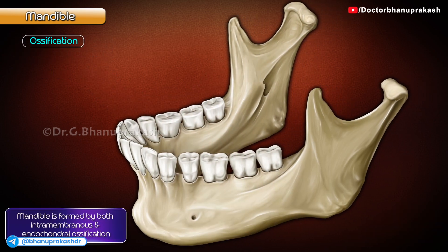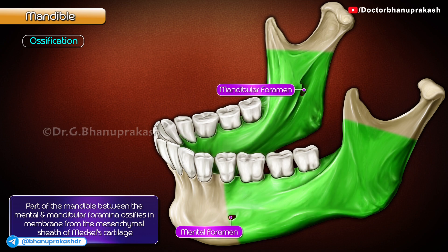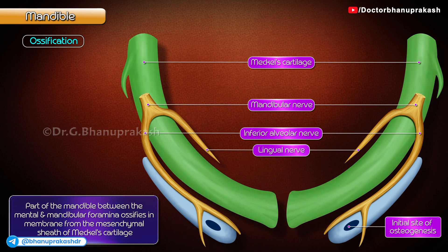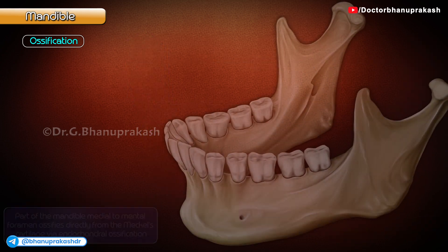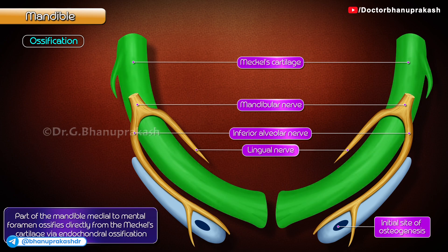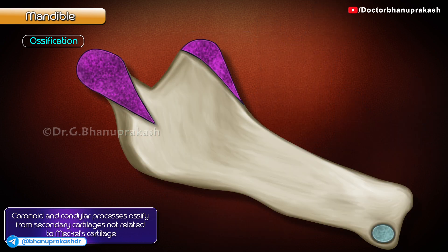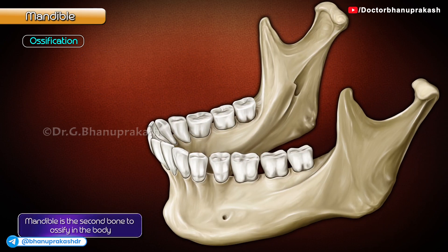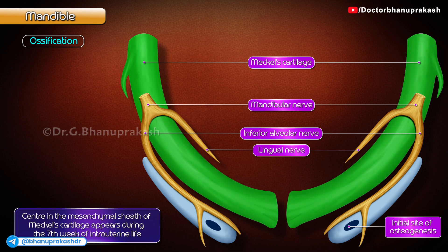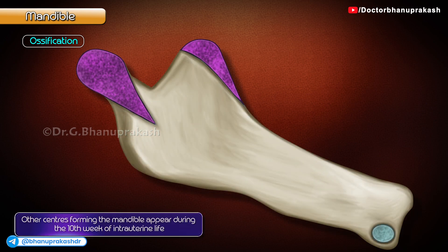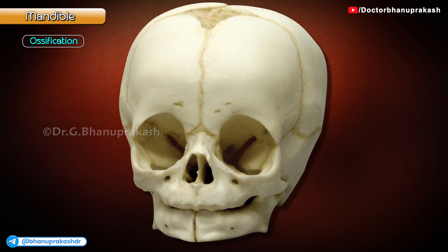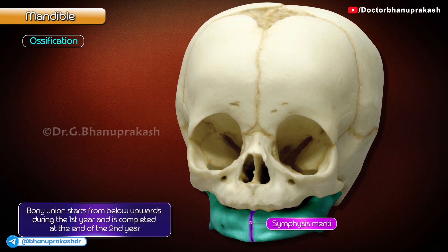Ossification. The mandible is formed by both intramembranous and endochondral ossification. The part of the mandible between the mental and mandibular foramina ossifies in membrane from the mesenchymal sheath of Meckel's cartilage from the first pharyngeal arch. The part medial to the mental foramen ossifies directly from Meckel's cartilage via endochondral ossification. The coronoid and condylar processes ossify from secondary cartilages not related to Meckel's cartilage. The mandible is the second bone to ossify in the body. The center in the mesenchymal sheath of Meckel's cartilage appears during the seventh week of intrauterine life, and other centers appear during the tenth week. At birth, the mandible consists of two halves connected by cartilaginous nodules at the symphysis menti. Bony union starts from below upwards during the first year and is completed at the end of the second year.